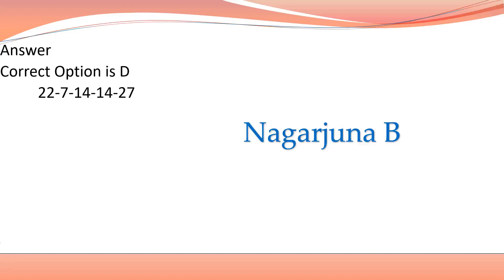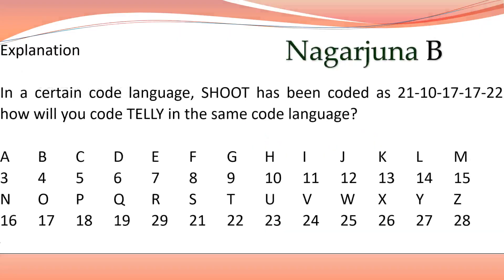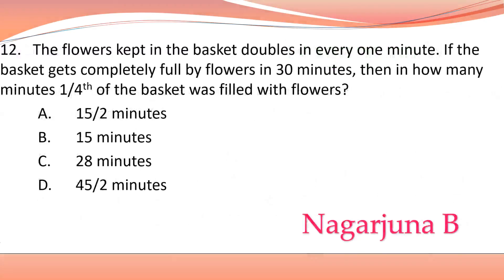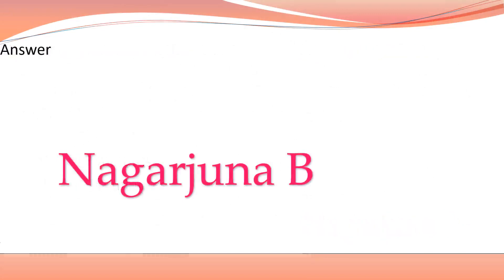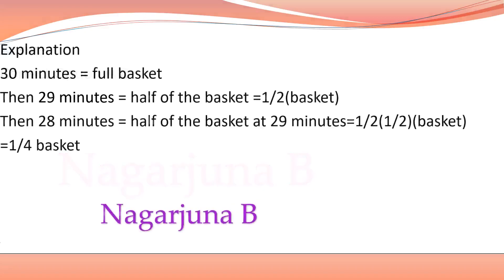How do we get this answer? You can go through the explanation here: write the code for each alphabet and you get the correct answer. The next question's answer is 28 minutes, option C. The explanation is present here — you can go through this one and you will get the correct answer.